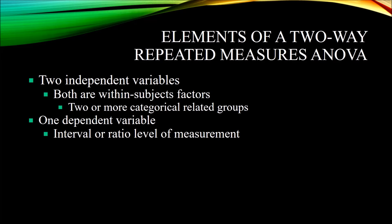Both interval and ratio are considered continuous variables. The way they differ is that ratio has a true zero. For interval level, consider the Fahrenheit scale — you have equal distance between observation points, but zero degrees Fahrenheit doesn't represent an absence of heat. For ratio level, consider the Kelvin temperature scale — you have equal distance between observations, and zero does represent an absence of heat. That is a ratio level of measurement.